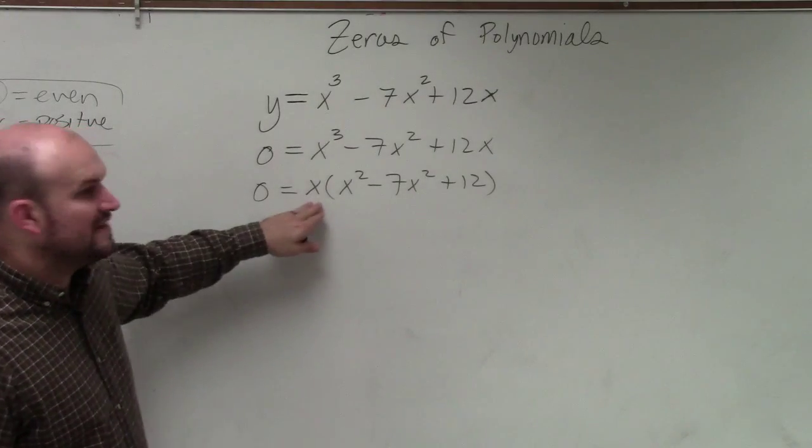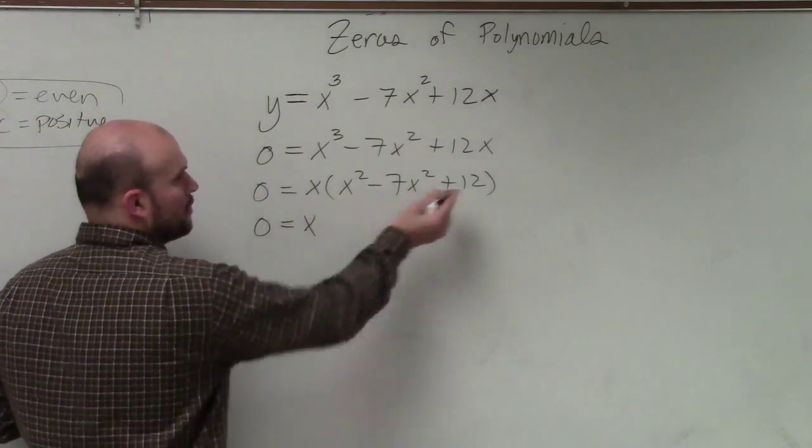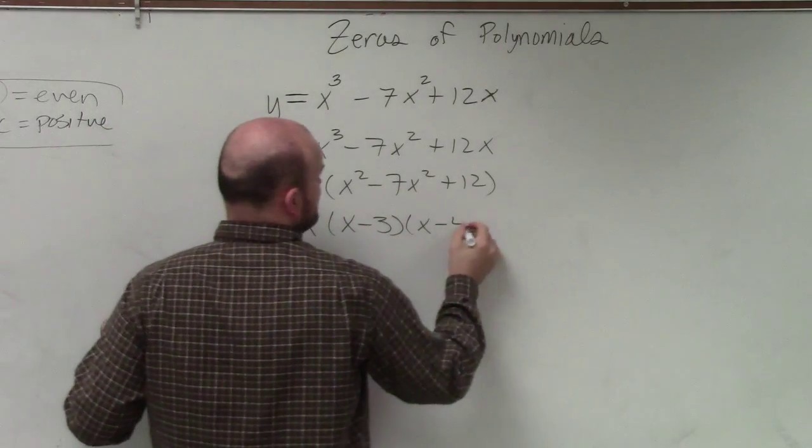So now, I factor this and I can factor that, which I already showed you the factoring form. What two numbers multiply to give you 12? Add to give you negative 7. That's x minus 3 times x minus 4.